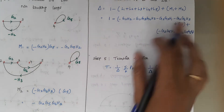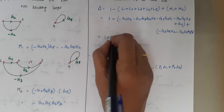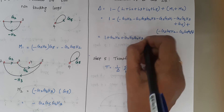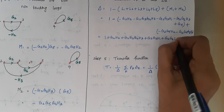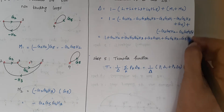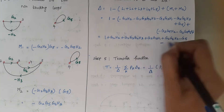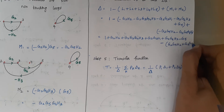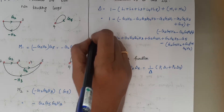Simplifying by taking the minus sign inside: Δ = 1 + G2H2 + G2G3G4H3 + G2G3H1 + G2G6H3 − G5 − G2G5H2 − G2G5G6H3. This is the final value of delta.